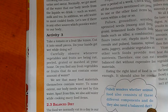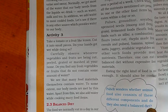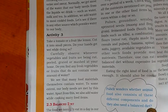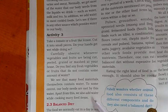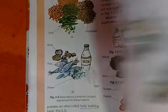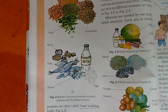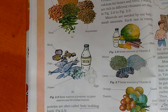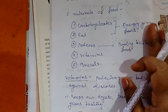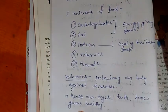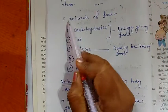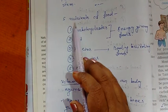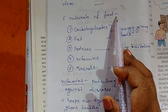So these are the 7 components of food — that is carbohydrates, proteins, fats, vitamins, minerals, roughage, and water. So totally 7 components in the food we eat. These are the 5 nutrients of food.